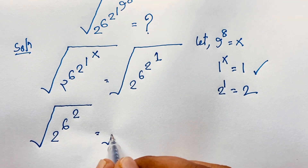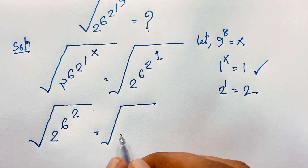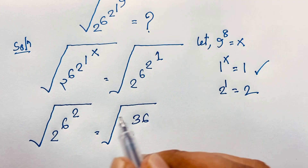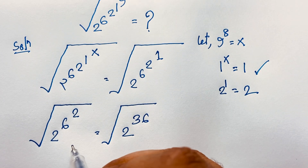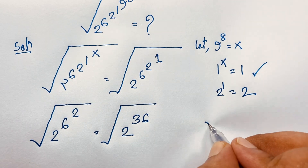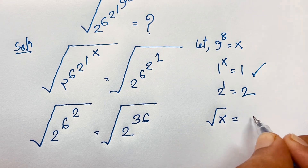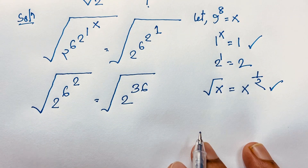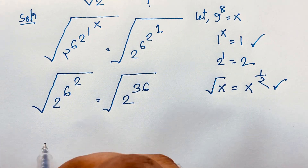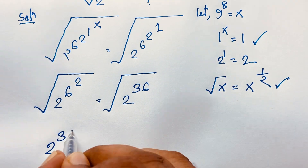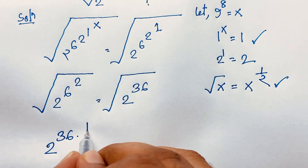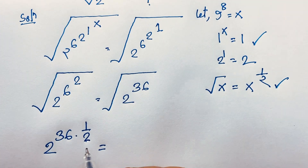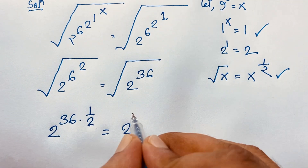Square root of 2 to the power 1 times 6 to the power 2: that will be 36, because 6 to the power 2 is 6 times 6, which is 36. Now we know that square root of x equals x to the power 1 over 2. So applying this here, we get 2 to the power 36, and the square root gives us the exponent 1 over 2.